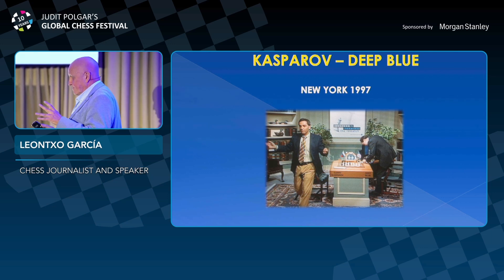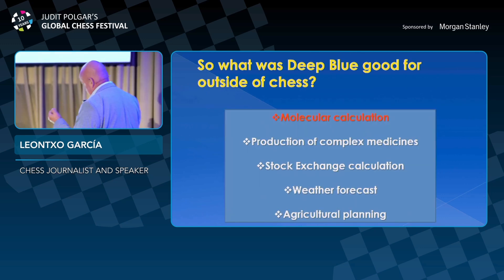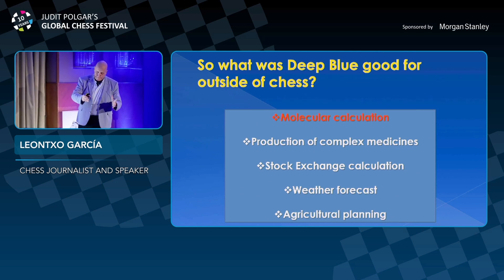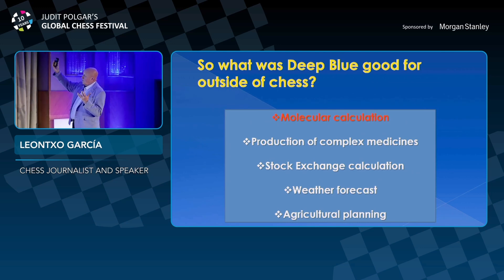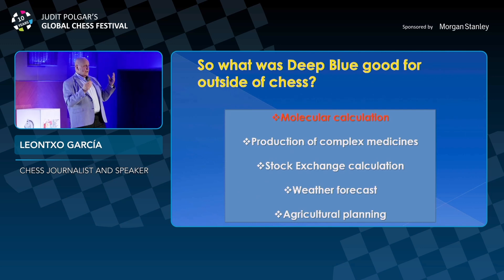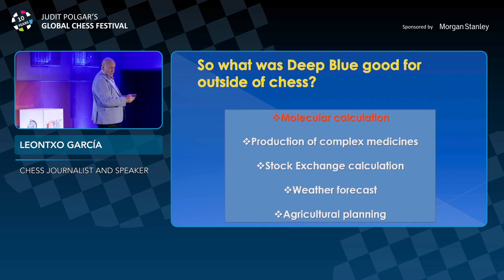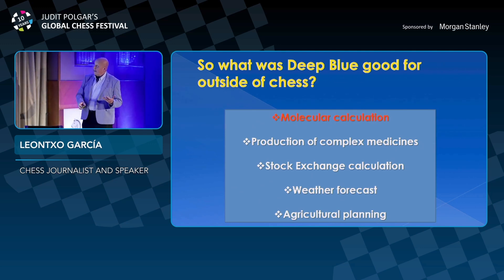But even more important than that, when IBM dismantled Deep Blue, they took advantage of what they had learned from chess by beating Kasparov in several fields where the common factor is molecular calculation, like the production of complex medicines. When we go to the pharmacy to buy a complex medicine, we are probably taking advantage of what IBM learned by beating Kasparov. Or stock exchange calculation, weather forecast, agriculture planning, etc.